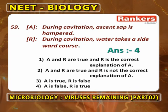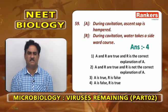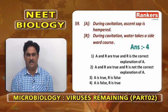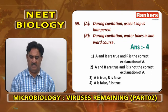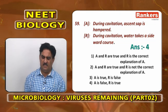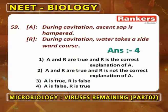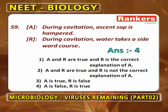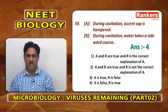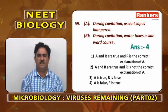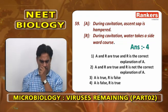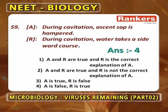Assertion-reasoning: During cavitation, ascent of sap is hampered (stopped) — this is wrong. During cavitation, water takes a sideward course — this is correct. When cavitation occurs, one path is stopped, but water will take numerous alternative paths. So A is false, R is true.